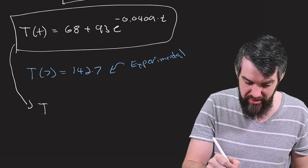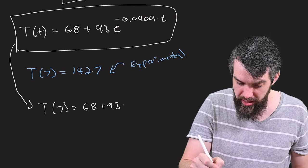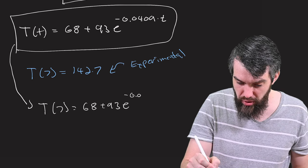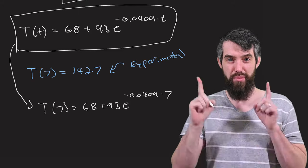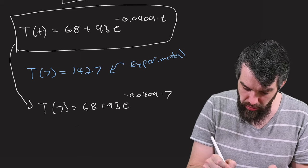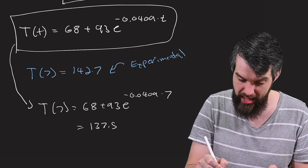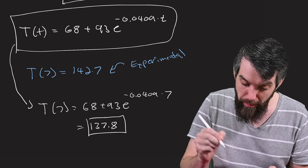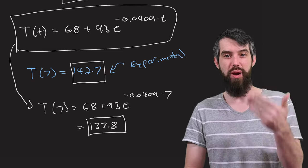So now the T of 7 according to the model is 68 plus 93 E to the negative 0.0409 times 7. Moment of truth, let's type it into the calculator. And this apparently is equal to 137.8. And so that is the model's prediction in comparison to the 142.7, which was our experimental.